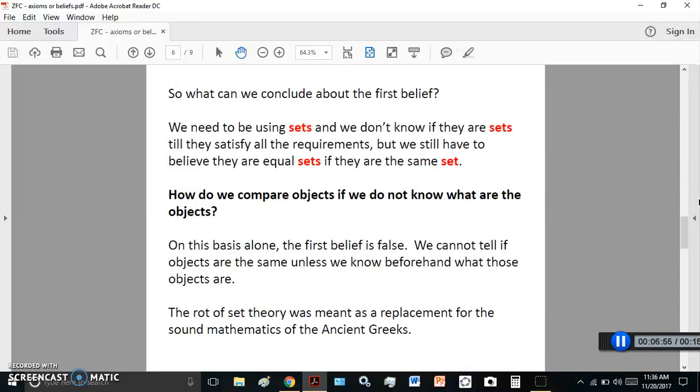So what can we conclude about the first belief? We need to be using sets, and we don't know if they are sets till they satisfy all the requirements. But we still have to believe they are equal sets if they are the same set. How do we compare objects if we do not know what they are? Think about that. How do we compare objects if we do not know what they are? So set theory starts without any definitions. On this basis alone, the first belief is false. We cannot tell if objects are the same unless we know beforehand what those objects are. Not only can we not tell if they are the same, but we cannot tell if parts of those objects are inside the objects unless we know what they are.